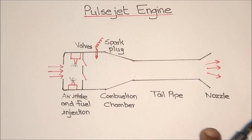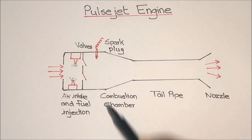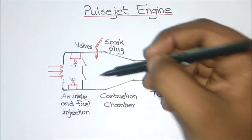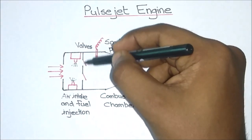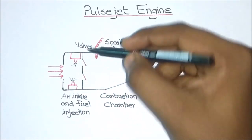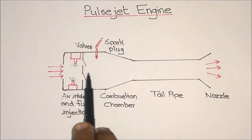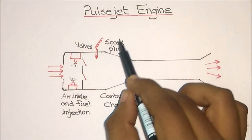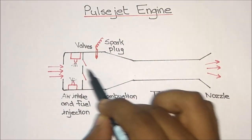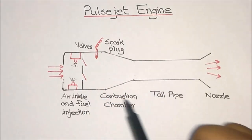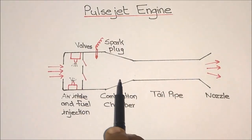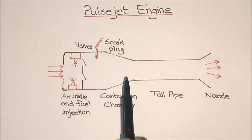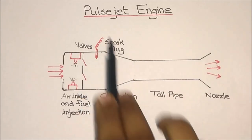The generation of thrust in the pulsejet engine is as follows. When the spark plug initiates the spark, the spring-loaded valves will be in the closed position — even though in this picture I represented them as open. The combustion process takes place as a constant volume process in a pulsejet engine.